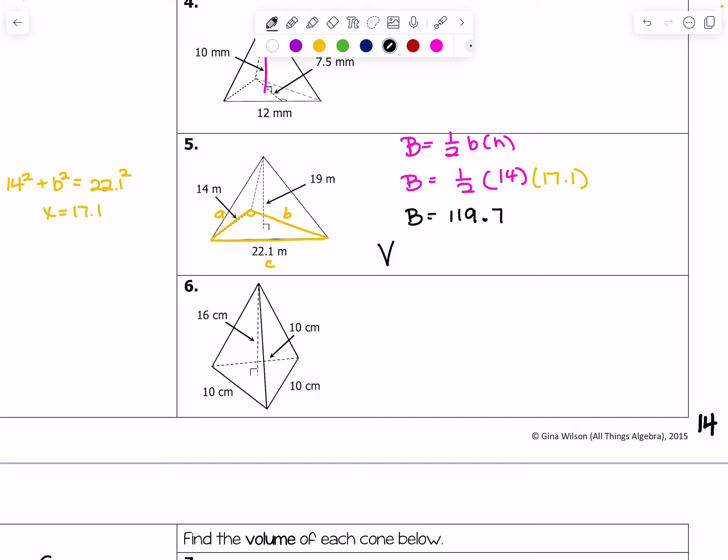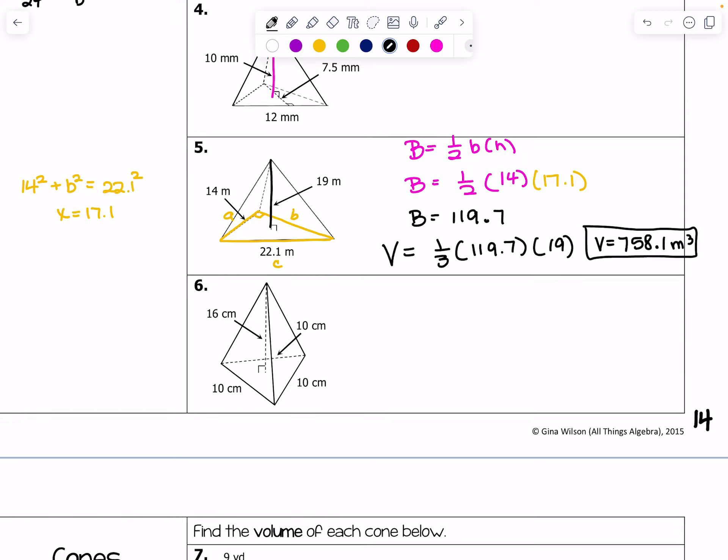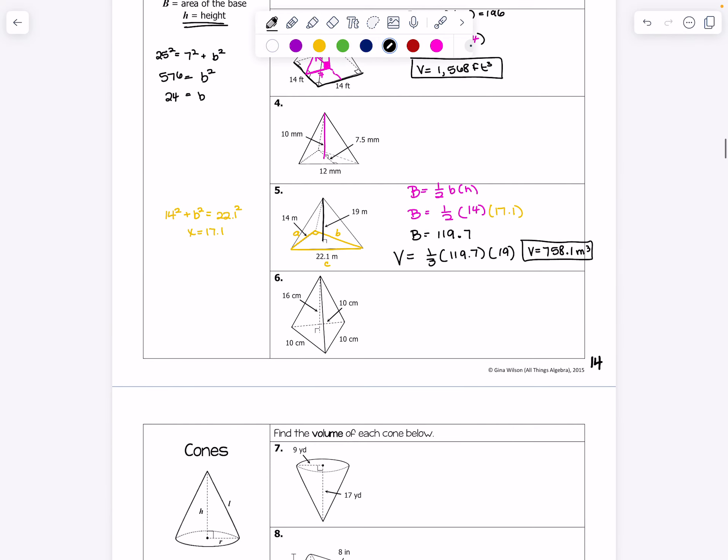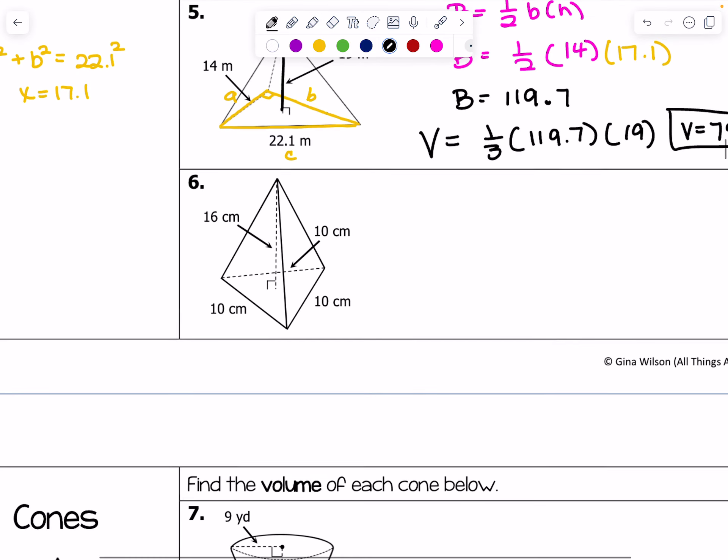Okay. Now I can find the volume. The volume is one third area of the base, which is 119.7 times the height, which is clearly given to us, which is 19. And my final volume is 758.1 meters cubed. Yeah. Okay. And that's it. Six is, again, ooh, you know, six is kind of interesting. You will need to use special right triangle here, in order to find one of the sides. So, if you can get it, great. If not, I wouldn't worry about it too much.